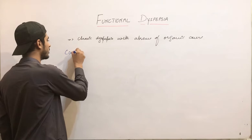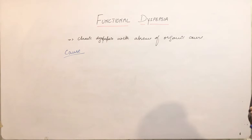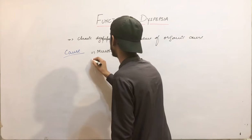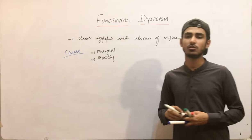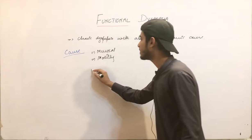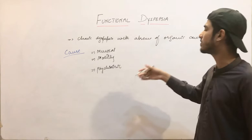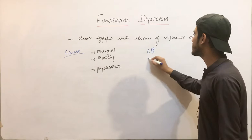What is the pathophysiology of this disease? Basically, the pathophysiology is not that well understood. It may be due to mucosal abnormality, it may be due to a motility disorder in the patient, or it may also be due to a psychiatric disorder. These are the basic causes of functional dyspepsia.